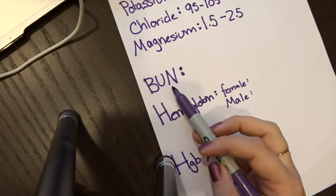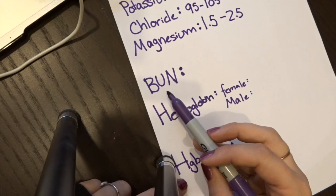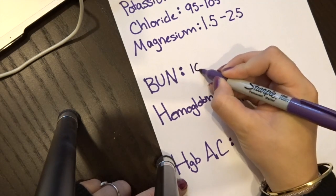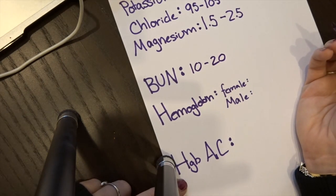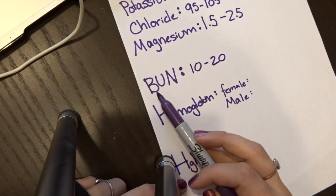And then for BUN, I like to think of a burger comes on a bun. And if I'm going to go to a restaurant that serves burgers, the price point is going to be $10 to $20. Usually restaurants that serve burgers, the price is $10 to $20. Burgers come on a bun.